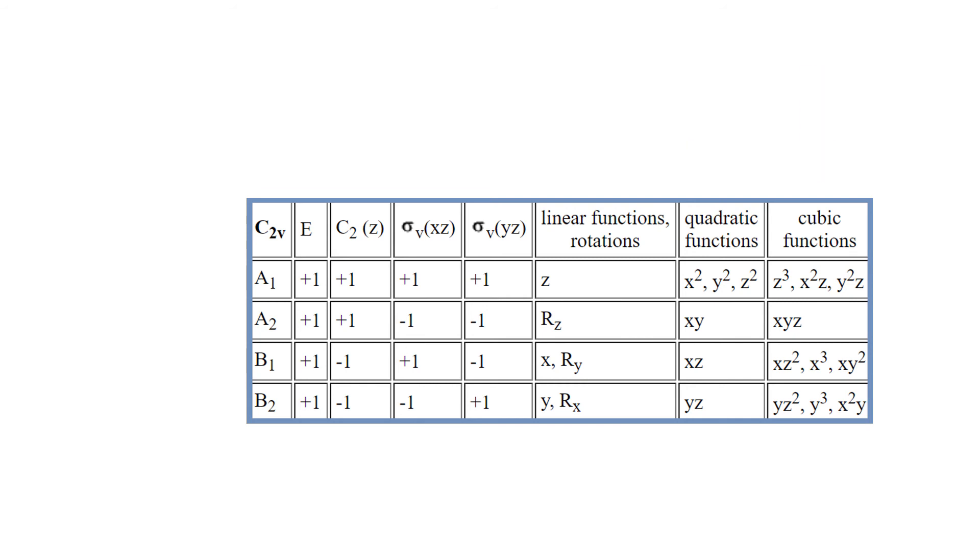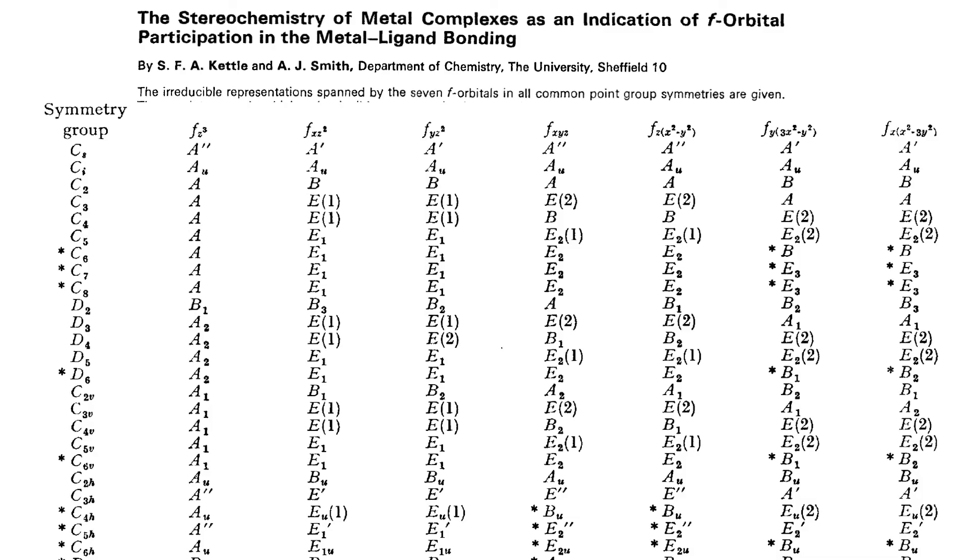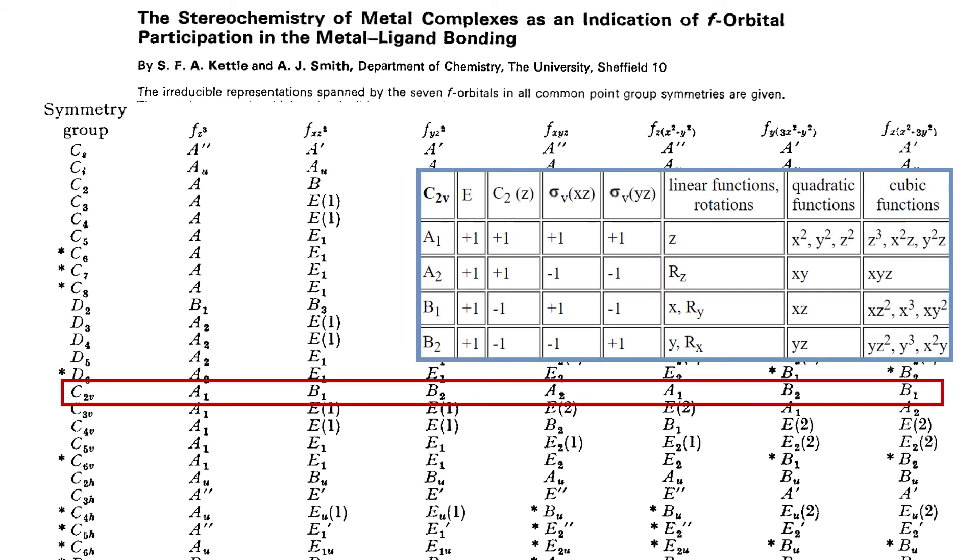The last column are cubic functions. Analogically to what we said about d-orbitals, this column describes f-orbitals. So here is a paper from 1967 with a list of irreducible representations for f-orbitals. Printing is a bit blurred, but in the first column we see fz-cubed and so on, and if you zoom at C2v, it corresponds perfectly to what we see in the character table, obviously.